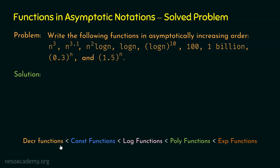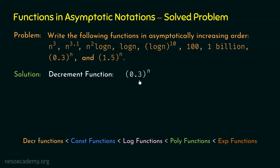First, we find all decrement functions in the list. We have 0.3 to the power n, which equals 3^n divided by 10^n. Since 10^n is greater than 3^n, the denominator is greater than the numerator, so 0.3^n is a decrement function. 1.5^n is not a decrement function because 15^n is greater than 10^n. Therefore, the only decrement function is 0.3^n.